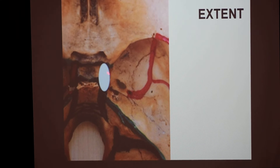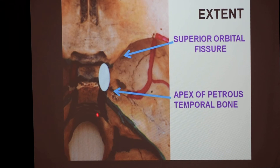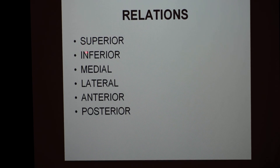Here is the location of the cavernous sinus. Looking at the extent: anteriorly, it extends up to the medial end of the superior orbital fissure — this is the area present between the lesser wing and the greater wing of the sphenoid — and posteriorly, it extends up to the apex of the petrous part of the temporal bone. So it extends from the superior orbital fissure to the apex of the petrous temporal bone. The relations can be described as superior, inferior, medial, lateral, anterior, and posterior, which we will see one by one.